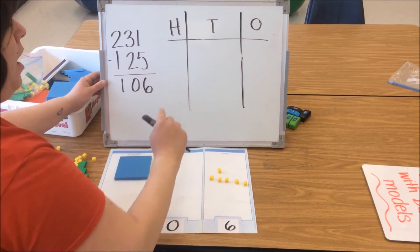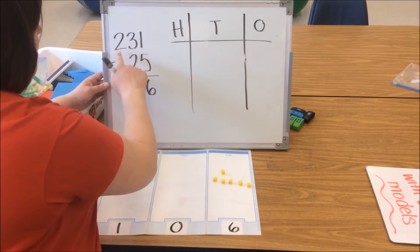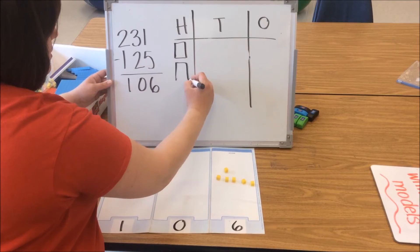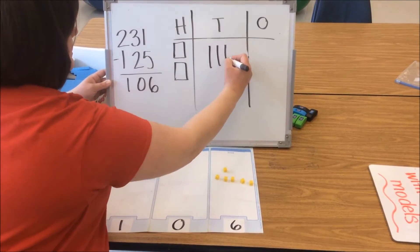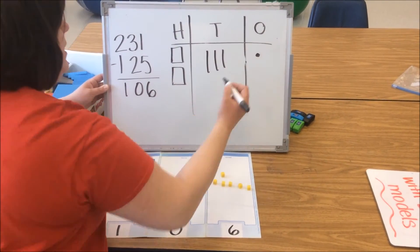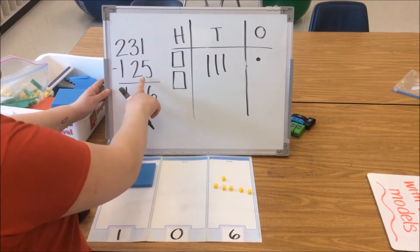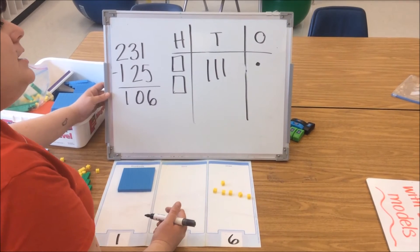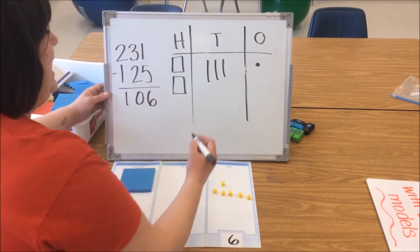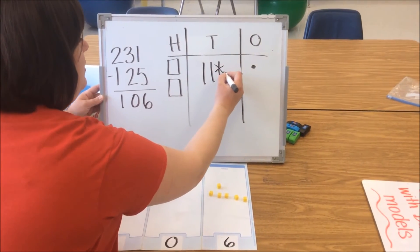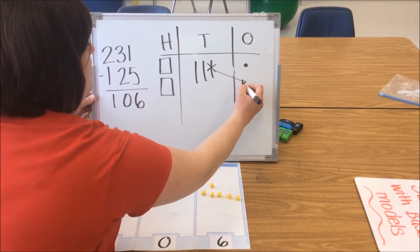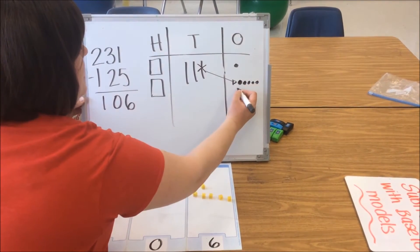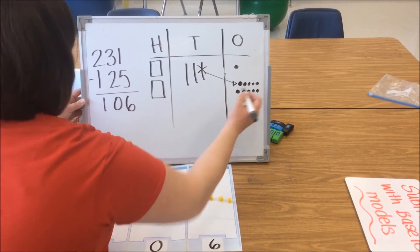Now we're going to go ahead and draw our model. For 231, we're going to start with our 200s, our 3 tens, and 1 one. We need to subtract 5 ones from our ones column. However, we don't have 5 ones, so we're going to decompose a 10 — draw an arrow and make 10 ones: 3, 4, 5, 6, 7, 8, 9, 10.